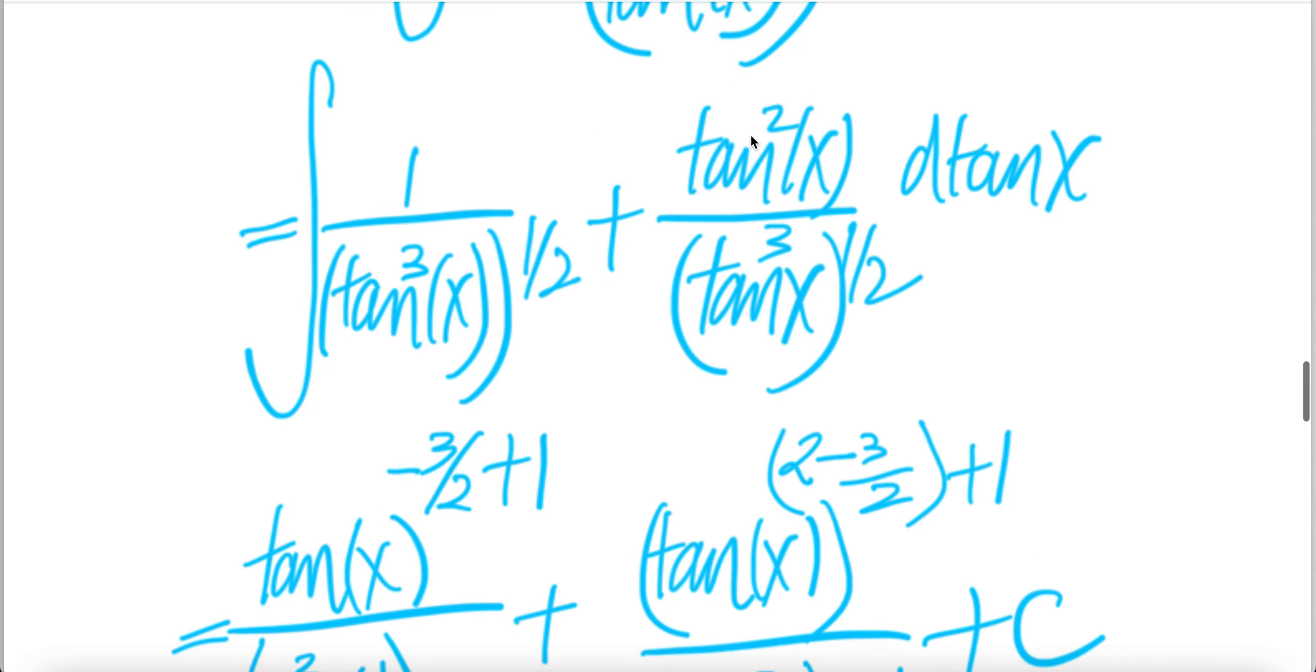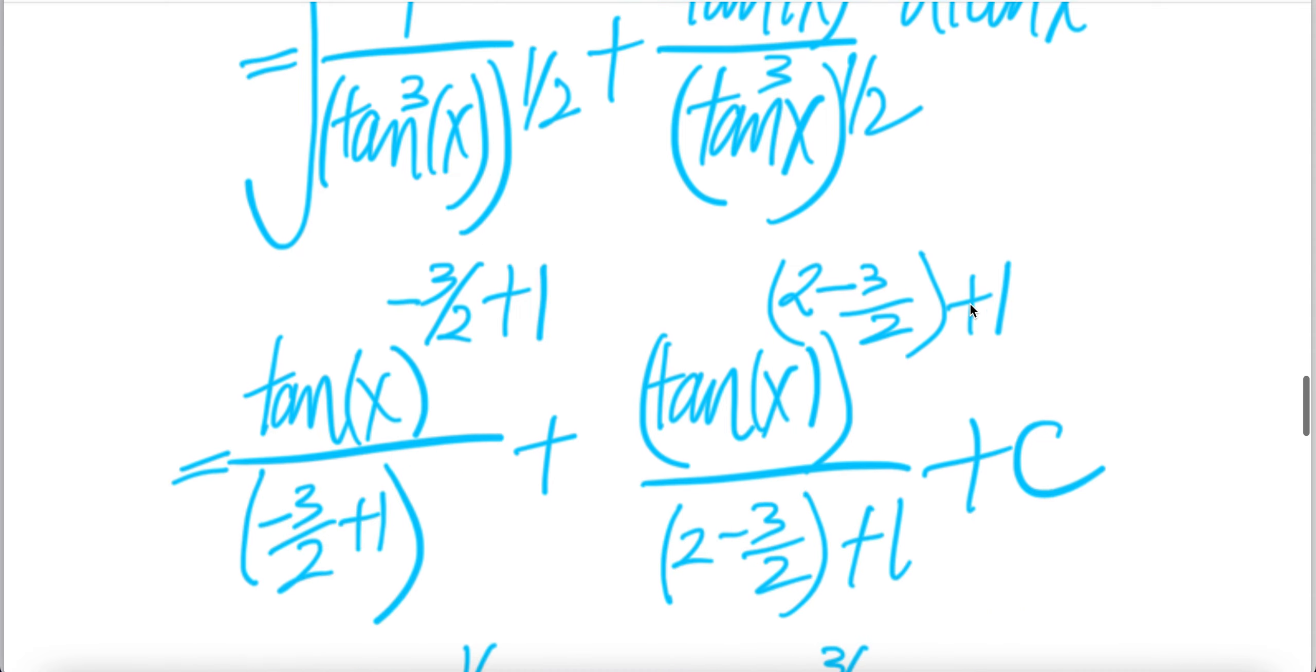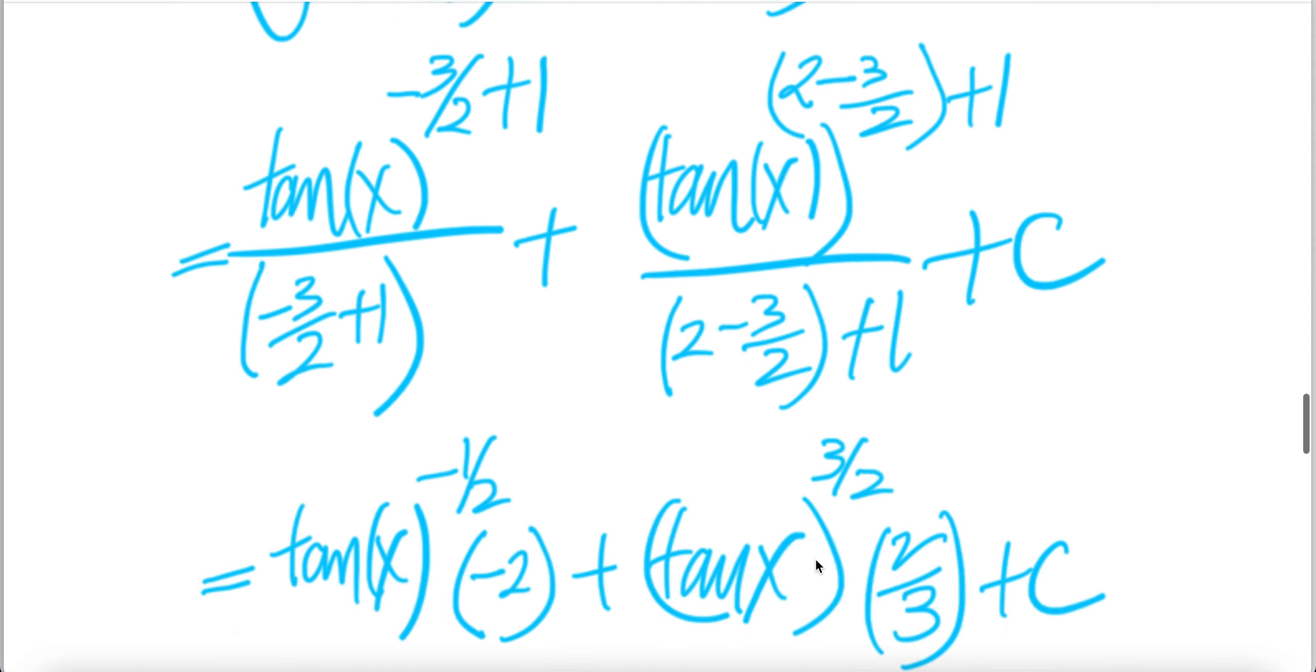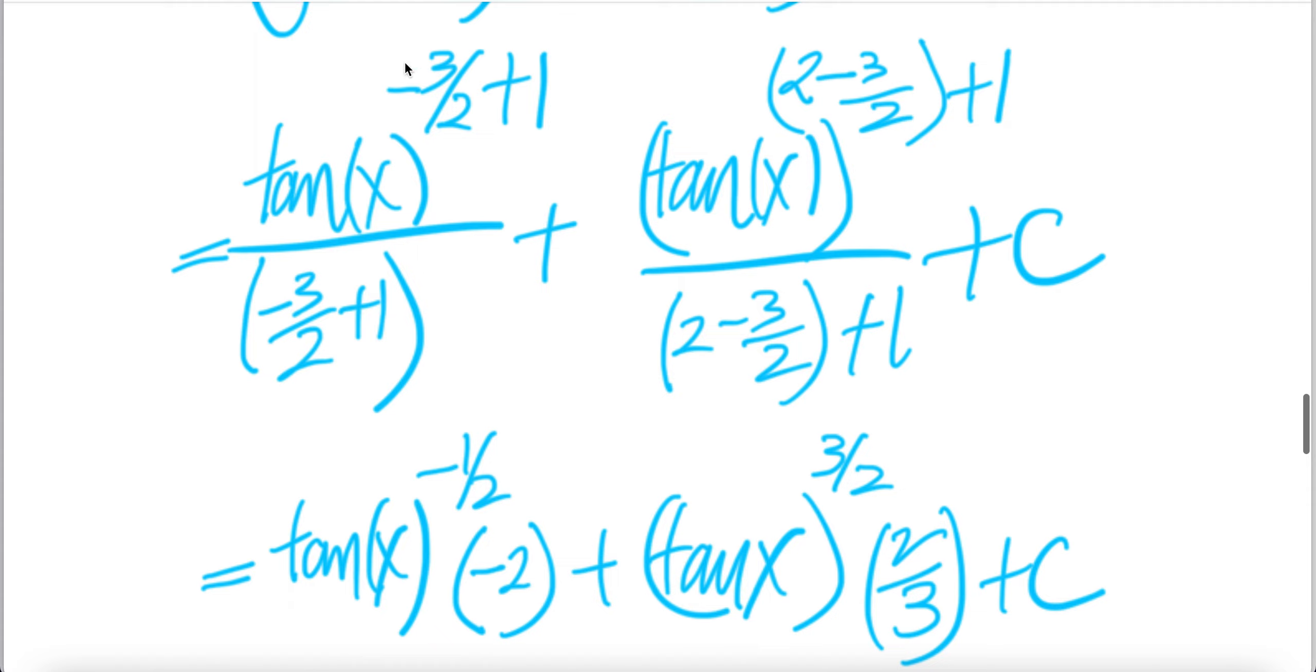Here, you have tangent x to the power of 2, and multiply that, you get tangent x to the power of 3 over 2. Since the base is the same, you can have 2 minus 3 over 2, because you get an integral, you need to add 1 here, and then write the same thing of the exponent down here. 1 is 2 over 2, minus 3 plus 2 is minus 1 over 2, minus 1 over 2 here, and minus 1 over 2 here, flip it up, you get negative 2.